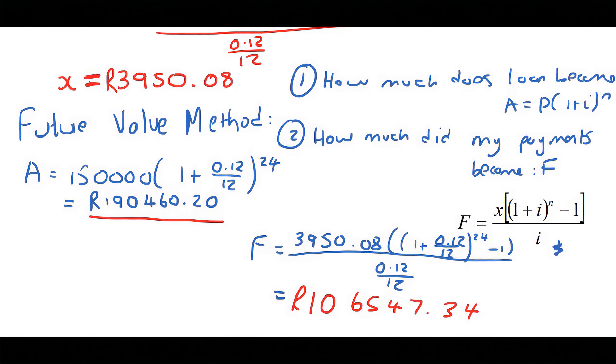So now, your loan has grown up to this amount. Your payments that you've made back to the bank is equal to that amount. So if we minus those two, that'll be how much you still owe the bank.